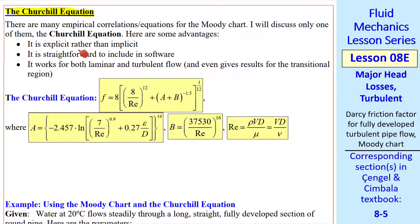Because of these three advantages, it is explicit rather than implicit, it's pretty straightforward to include in software, and it works for both laminar and turbulent flow. It even gives results for that fuzzy transitional region, although those results are not very reliable. In case you're not familiar with these terms, explicit means you have F equal some equation that you can just calculate. Implicit, like some of the older correlations, had equations like 1 over square root of F equal a bunch of stuff times the log of a bunch of stuff and 1 over square root of F. And you can't solve this explicitly as F equals something. You had to iterate to get F when you knew Reynolds number and epsilon over D.